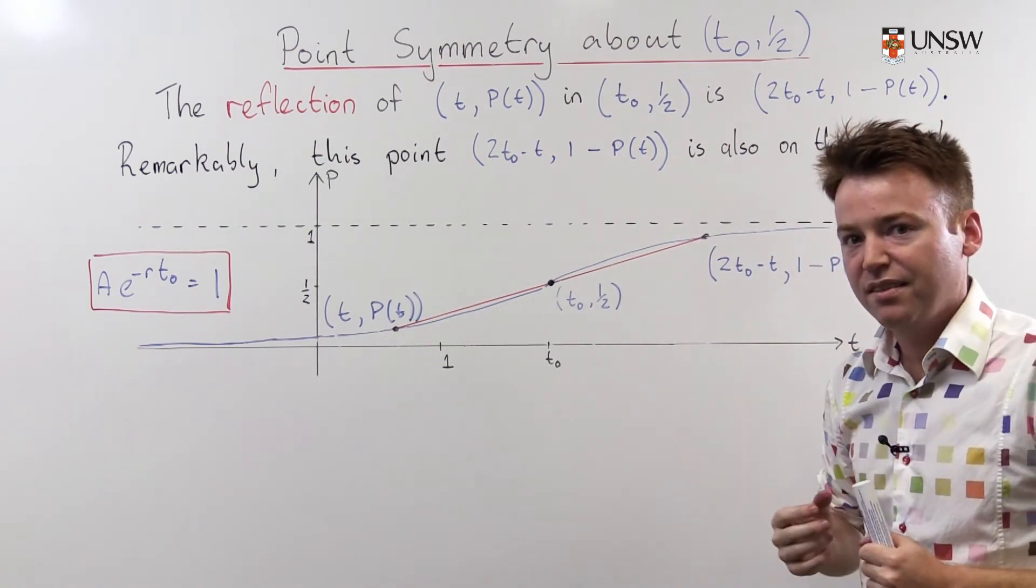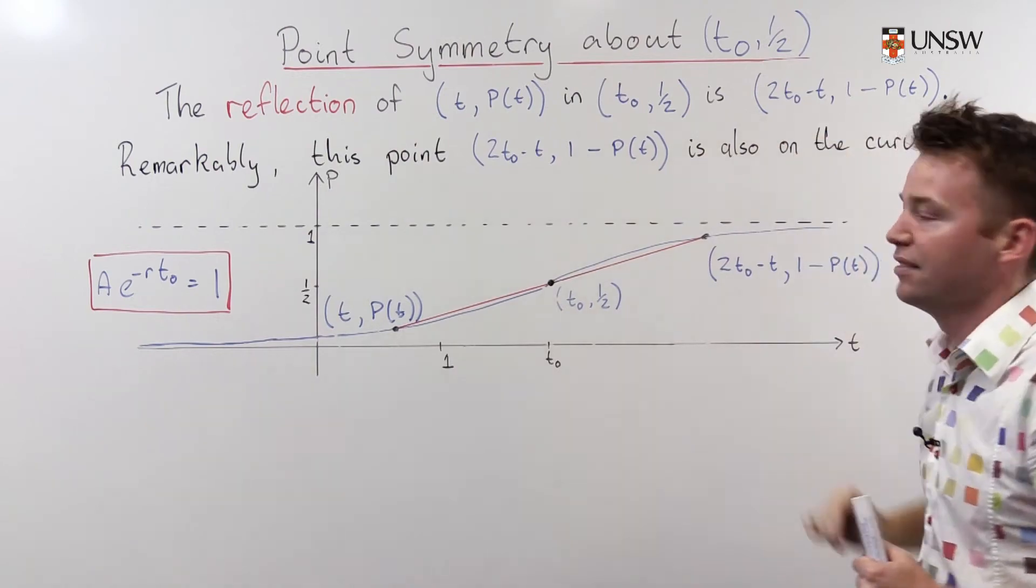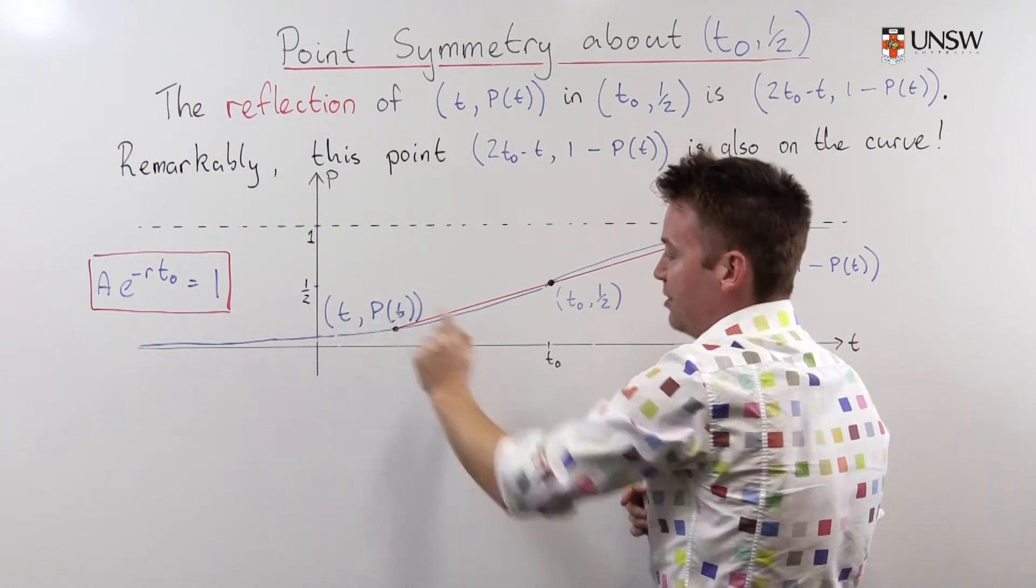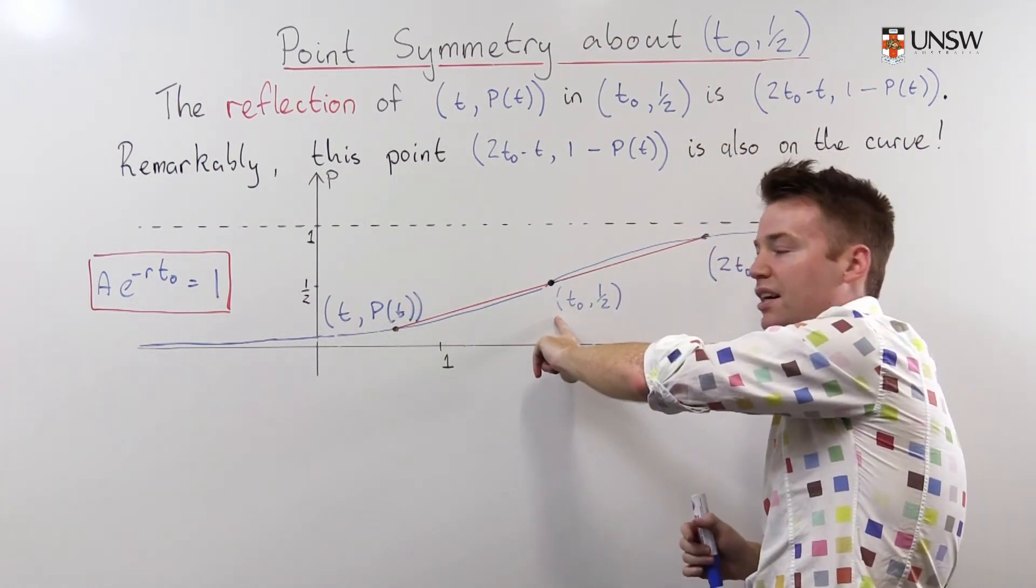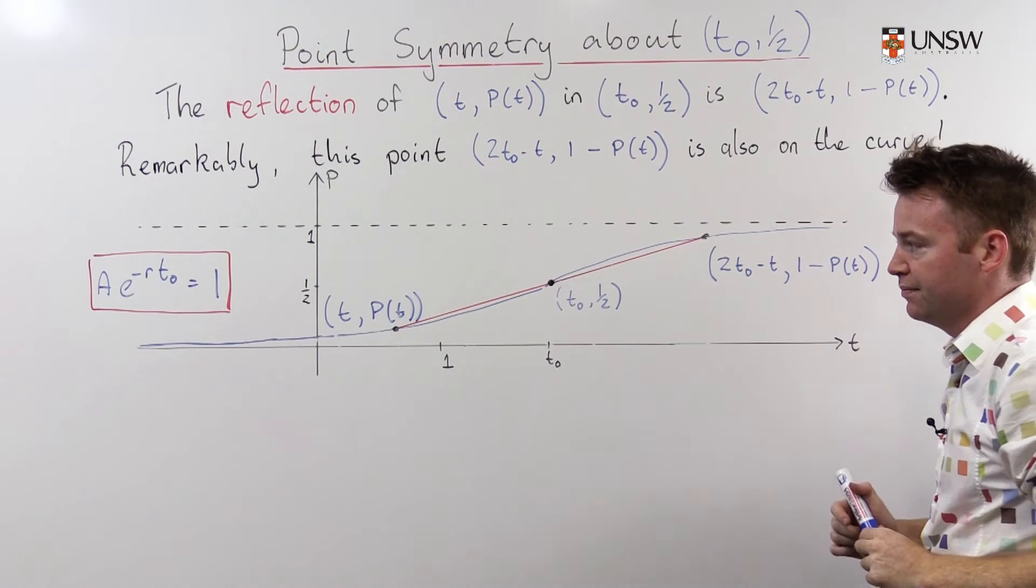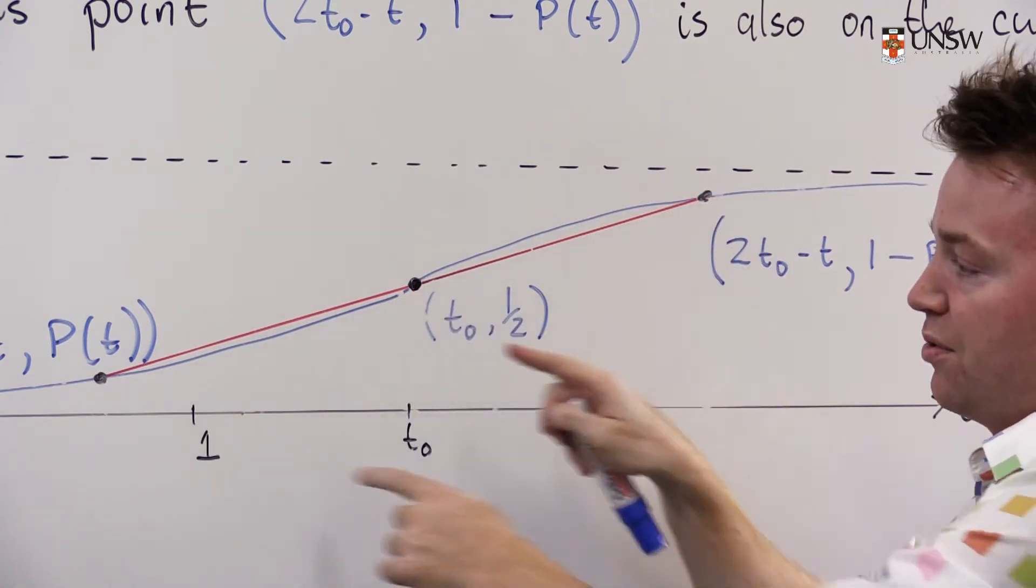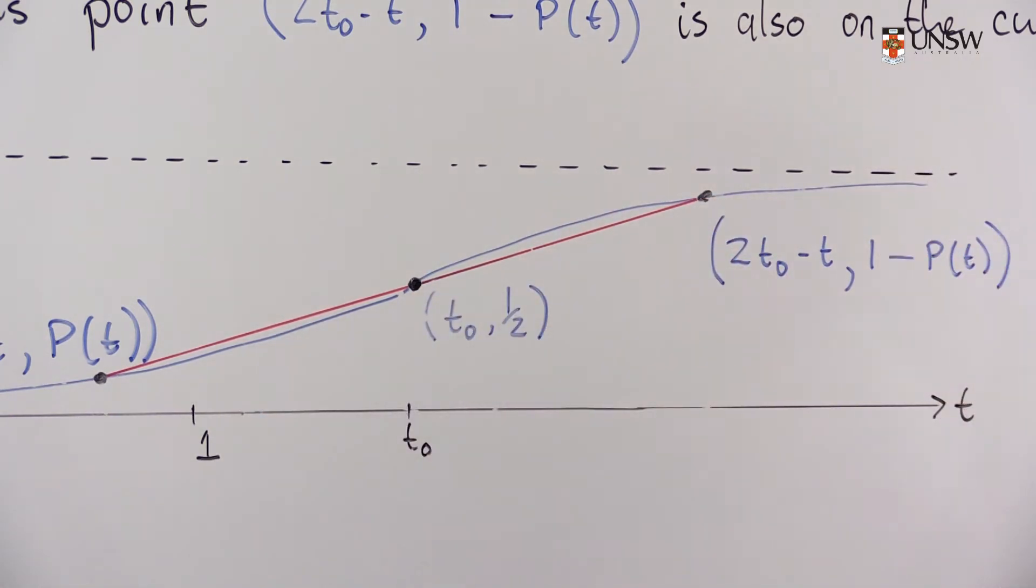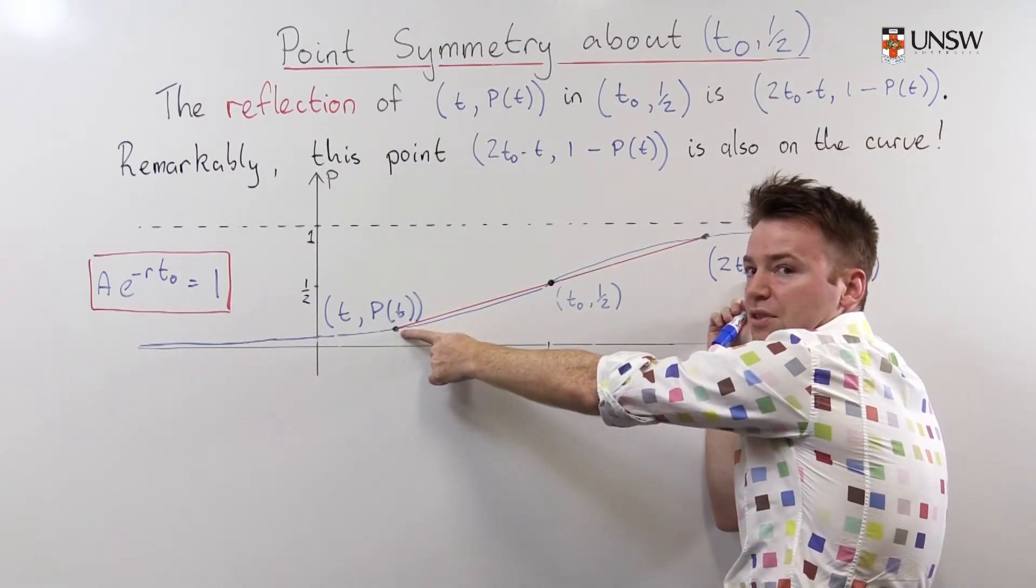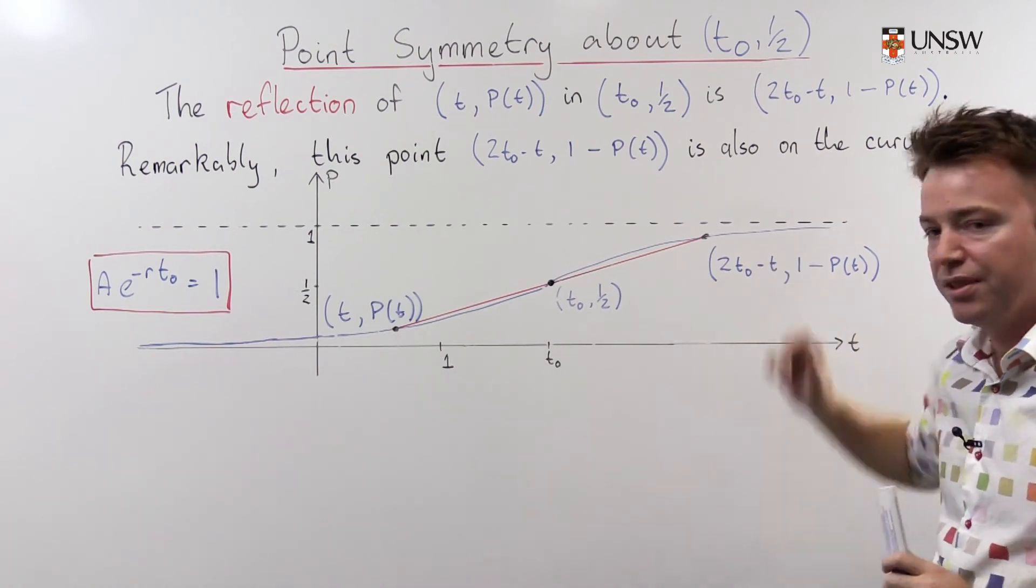First of all, let's make these definitions precise. The reflection of one point in another point is given like this. What that means is if I reflect this point here, which is on the curve, because it's of the form (t, P(t)), through this other point (t0, 1/2), then I get a third point, which is given here. And this third point is determined as the line through these two points exactly this far along. So this length here is equal to this length here. You can also think about this point as being the average of these two points.